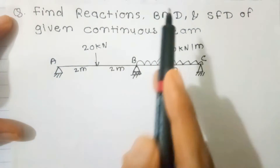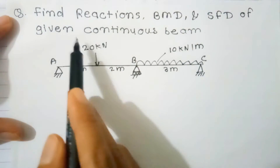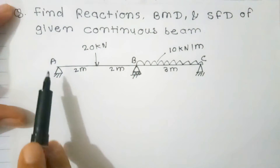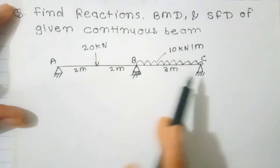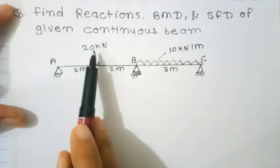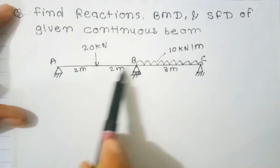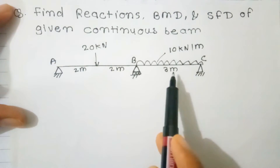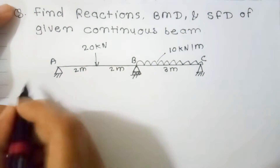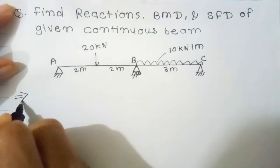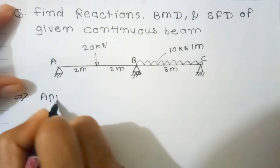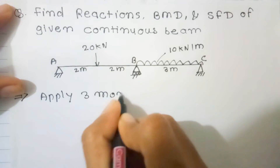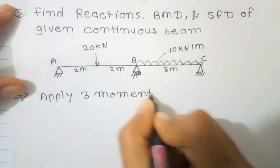Find the reaction, bending moment, and shear force diagram of the given continuous beam ABC, which is hinged at A and C and has a roller at B. A point load of 20 kN acts at 2 meters from A and 2 meters from B. A UDL of 10 kN per meter acts over a length of 3 meters. To find the reactions, apply the three-moment equation.